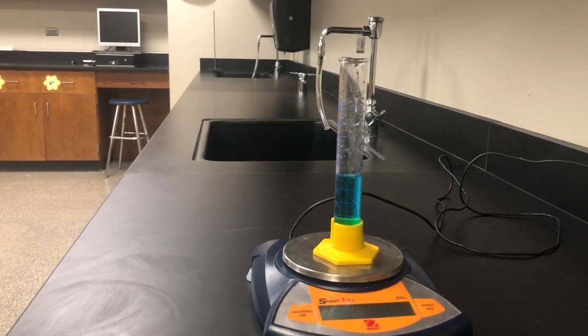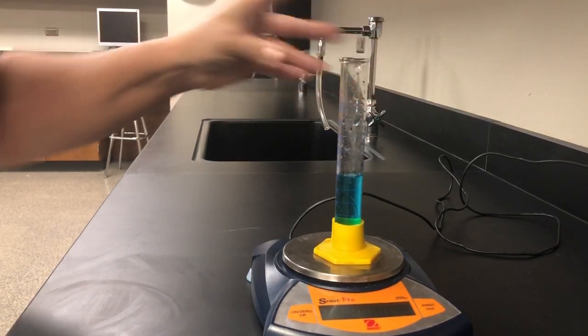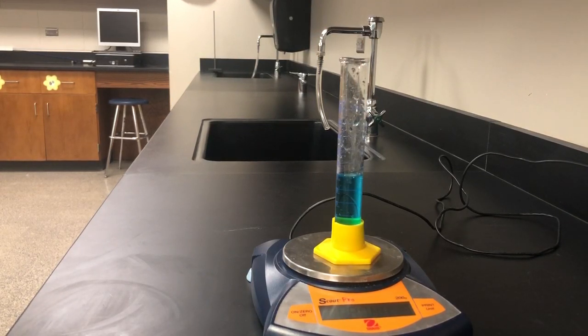Now my mass says 27.50 grams. I'm going to turn it and get eye level with it. Remember, my graduations go by one, and I can tell that it's between the 26 and the 27, closer to 27. So I'm going to estimate it at 26.7 milliliters. That 0.7 is my estimation.